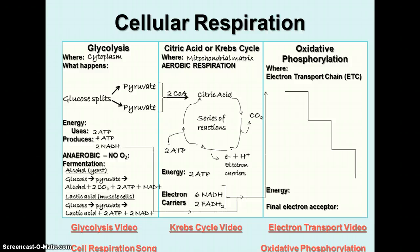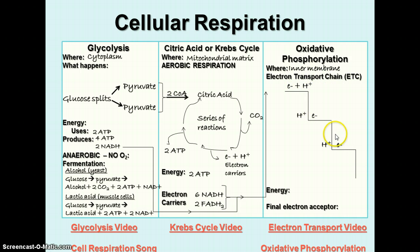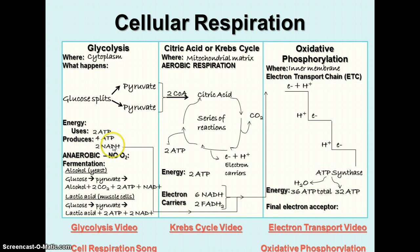In your foldable, the NADH and the FADH2 are carried to the electron transport chain. Electrons plus their protons are transferred down from one protein to the next, pumping hydrogen ions into the intermembrane space. Eventually, the hydrogen ions pass through the ATP synthase molecule to produce water and also the 32 ATPs of energy. So we have 36 ATPs total: two from glycolysis, two from the Krebs cycle, and 32 from ATP synthase in oxidative phosphorylation. The final electron acceptor through this whole process is oxygen, and this is where the water comes from that is a product of cellular respiration.